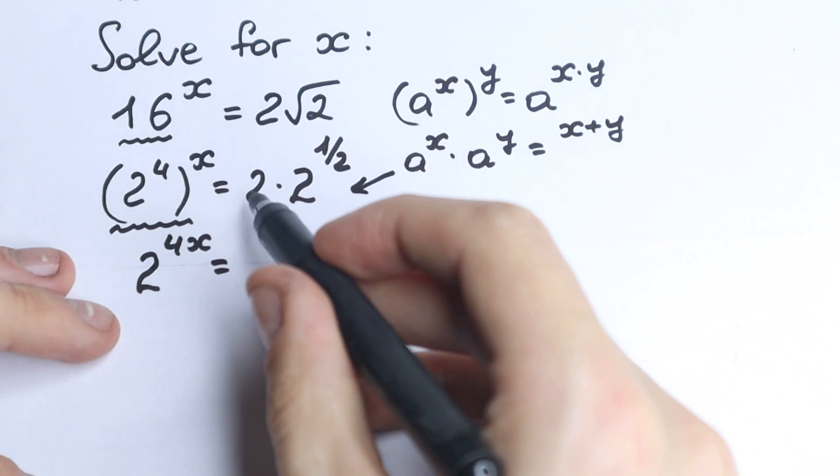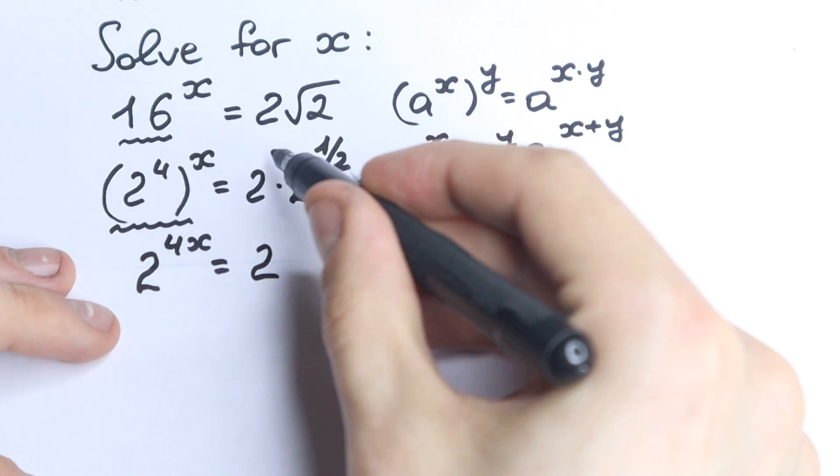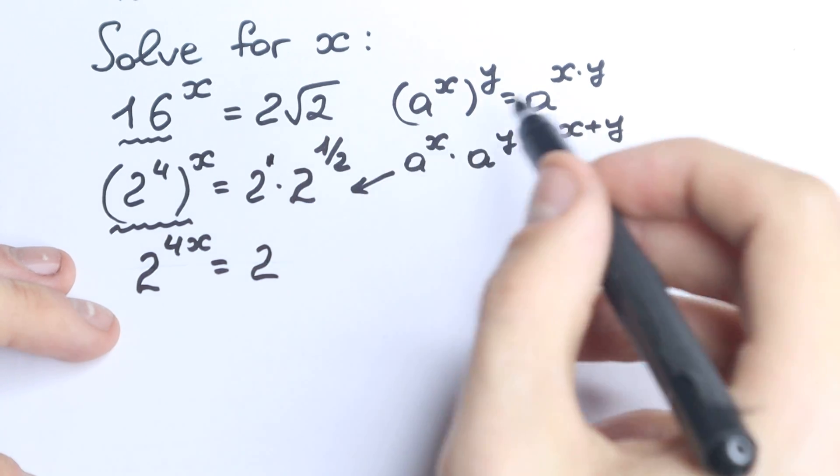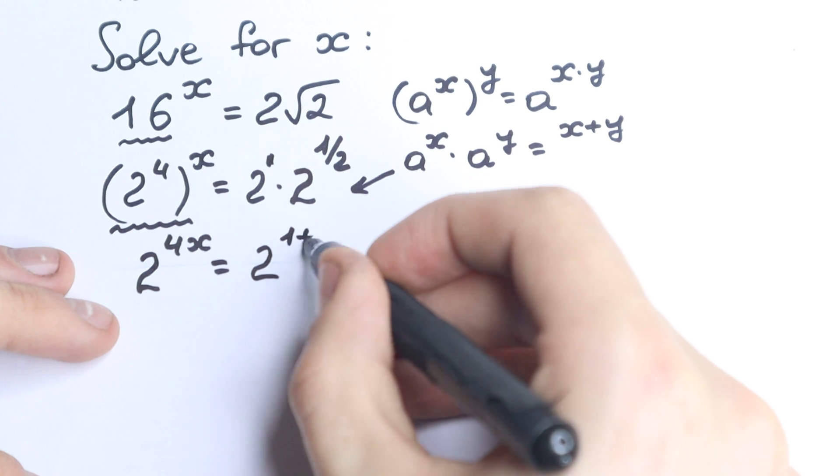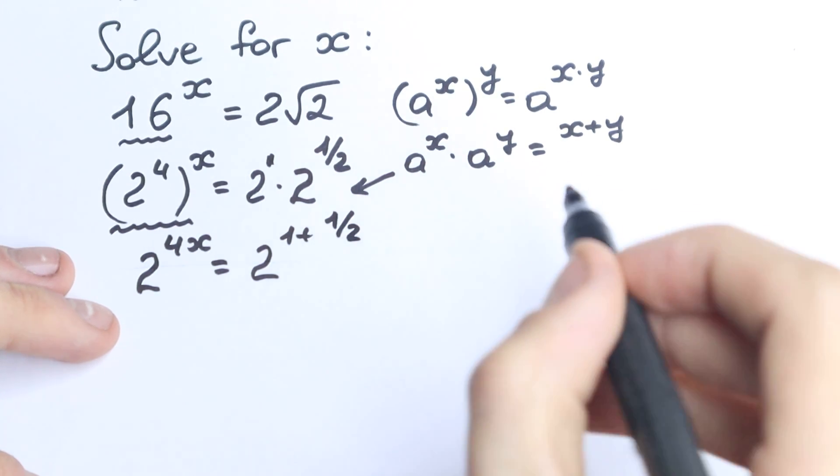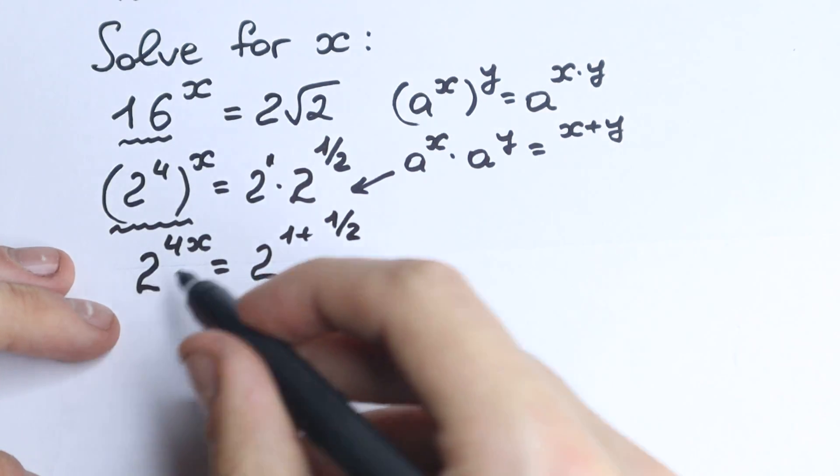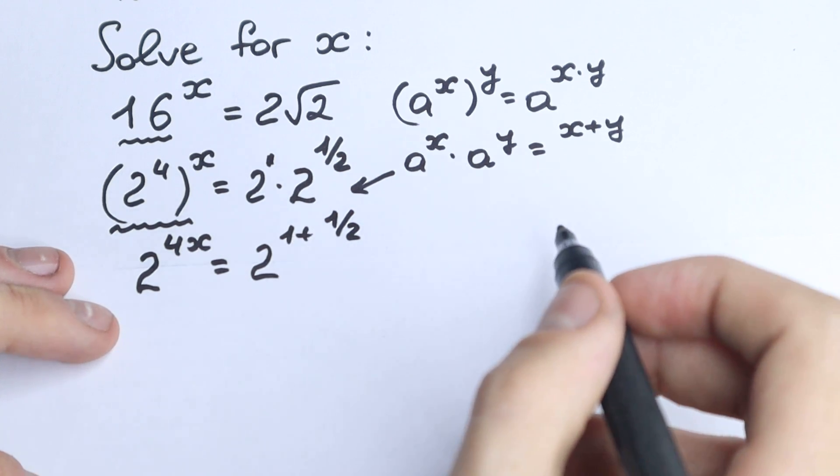So we applied it as well. And we have 2 to the power, so right here we have like imaginary one, we don't see it also, but we have it. So 1 plus 1 half. Okay, 1 plus 1 plus 1 half. Okay, so 2 to the power 4x, 2 to the power 1 plus 1 half, which is really great.